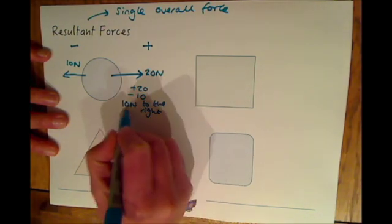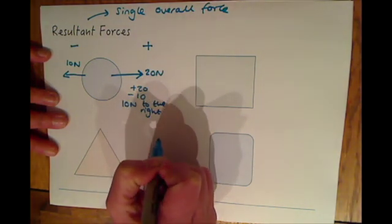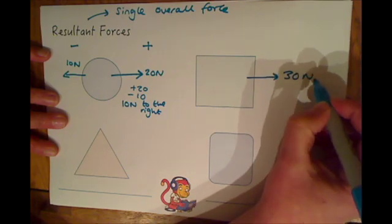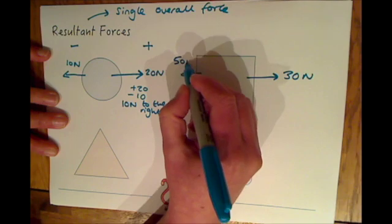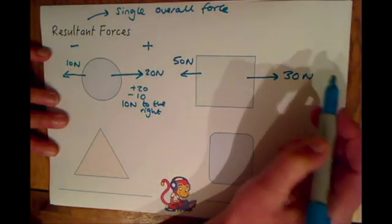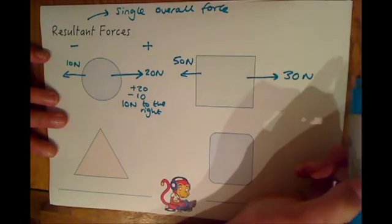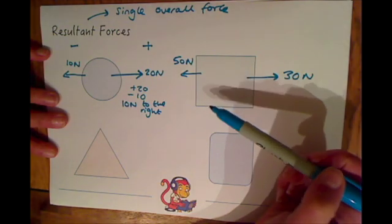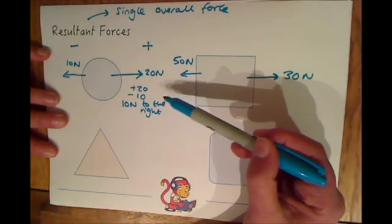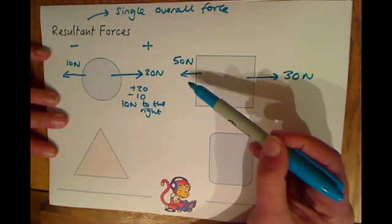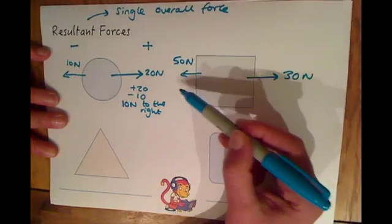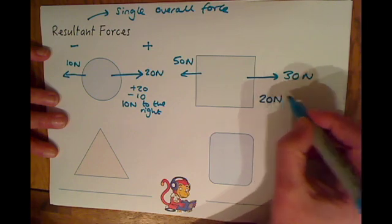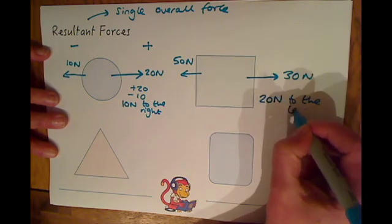When you write about resultant forces you have to give the size and the direction of the force. Let's take this block: we could have 30 newtons to the right and 50 newtons to the left. In this case we would have a resultant force of 20 newtons to the left, because if you've got 50 newtons one way but only 30 the other, you've got 20 left over acting to the left. So our resultant force would be 20 newtons to the left.